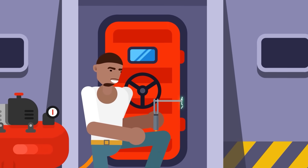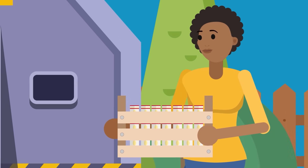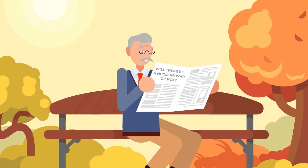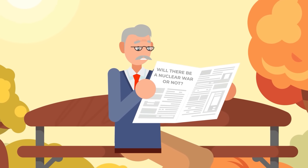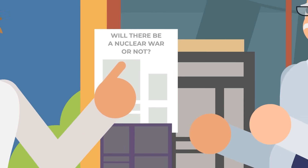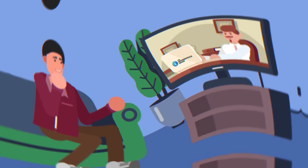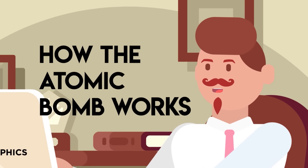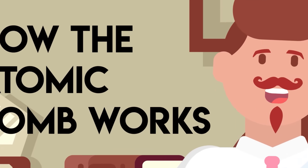People built bunkers in their backyards and stocked up on canned goods, schools ran nuclear war drills, and the world waited with bated breath for the outbreak of nuclear war and what felt like the imminent end of the world. But although the existence of nuclear weapons was common knowledge, and despite the widespread panic about nuclear war, few people truly understood just how an atomic bomb works.